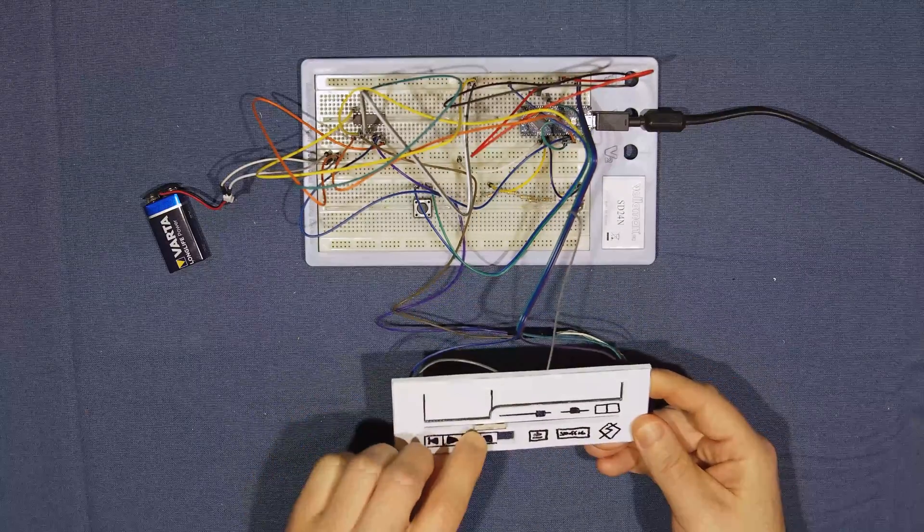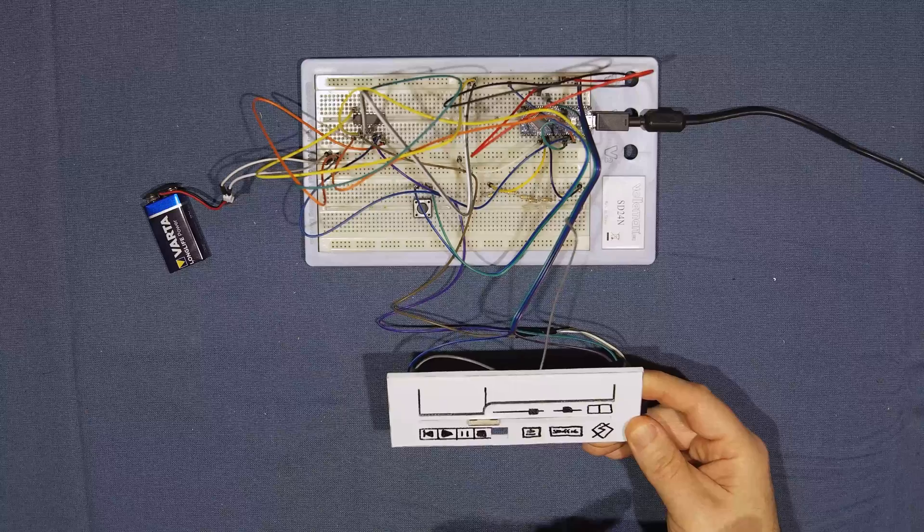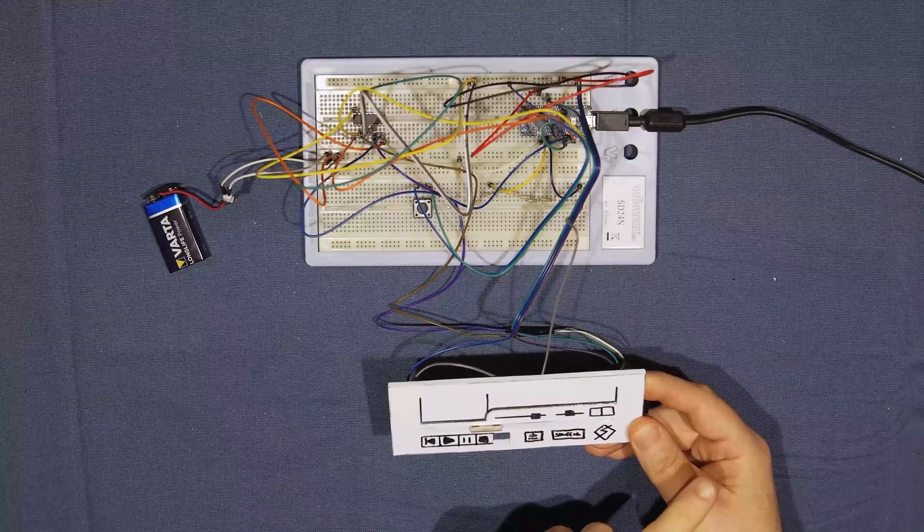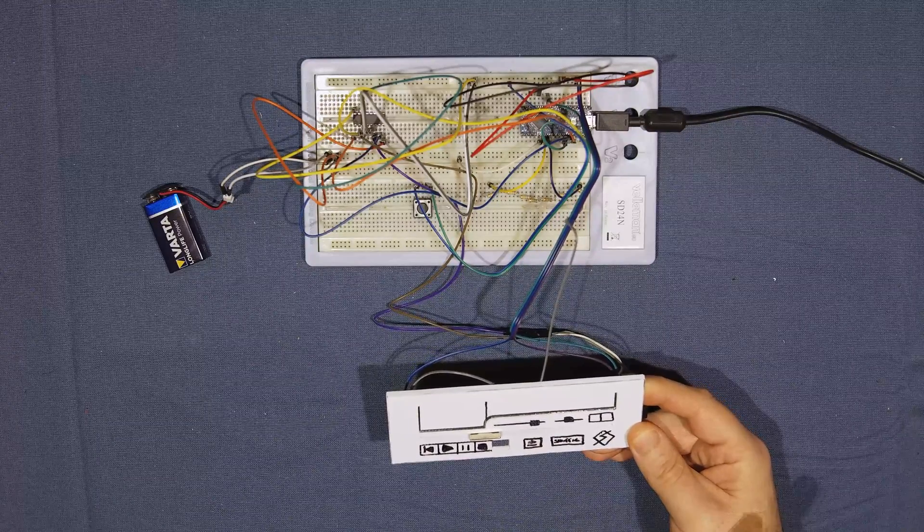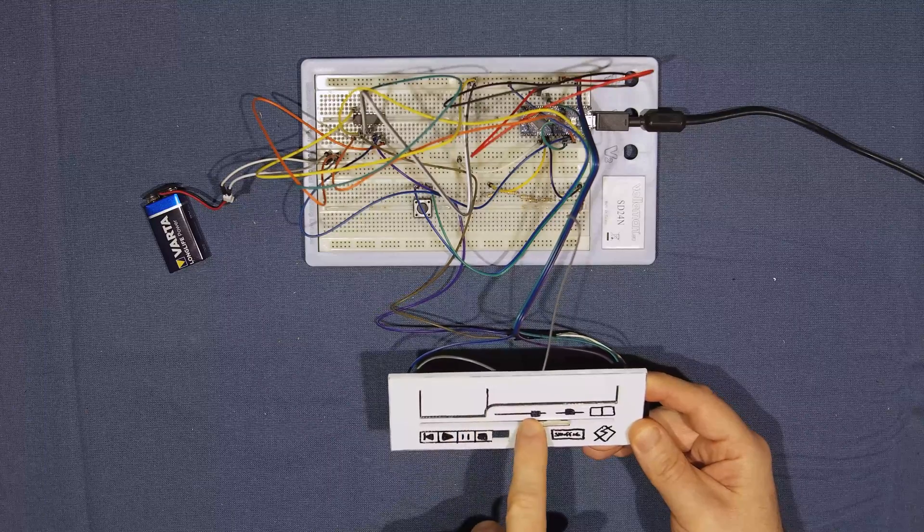Then, if you touch the slider, the Arduino tells the Raspberry Pi, which then pauses the playback, and then the Raspberry Pi listens for the new position for where the song should be playing from.